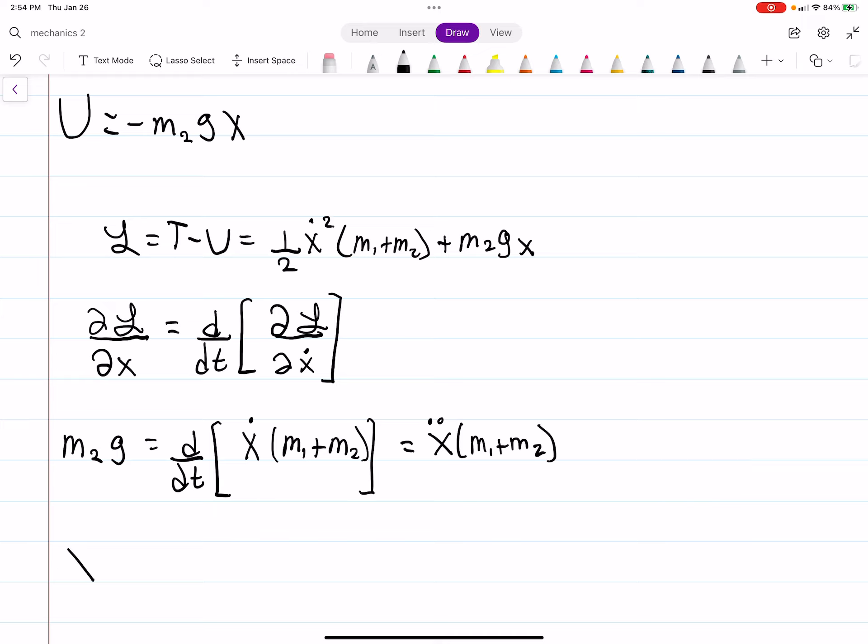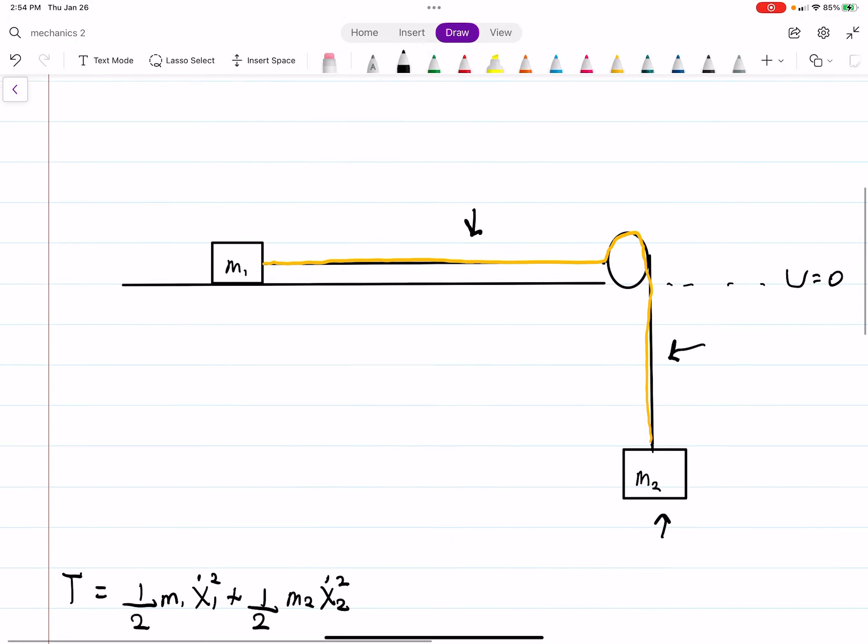So then the acceleration, X double dot, is pretty easy to solve for. We just have to divide over by M1 plus M2. And this is the acceleration of the two blocks.